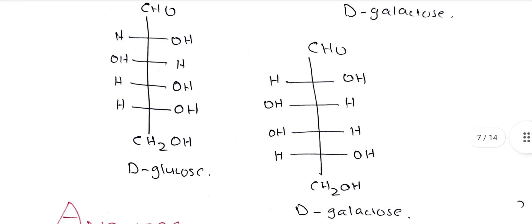In D-Glucose and D-Galactose, looking at the CH2OH end, we count the chiral carbons — one, two, three. At carbon number three, the configuration differs between D-Glucose and D-Galactose. At that chiral carbon, there are four different groups attached, making it a chiral center.